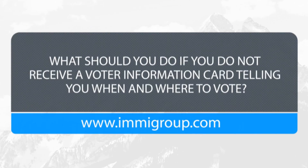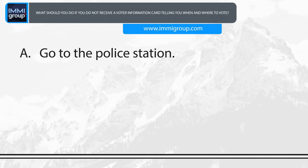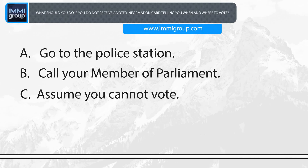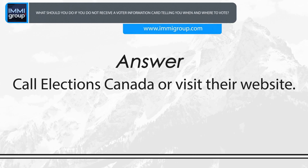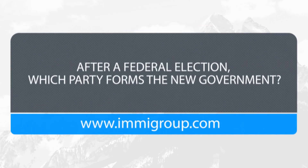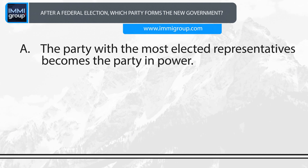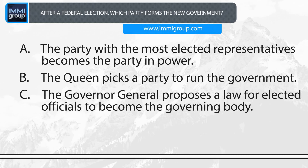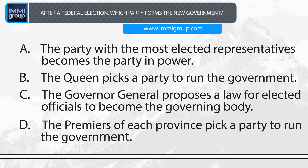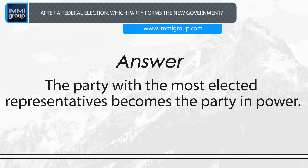What should you do if you do not receive a voter information card telling you when and where to vote? A. Go to the police station. B. Call your Member of Parliament. C. Assume you cannot vote. D. Call Elections Canada or visit their website. Answer: Call Elections Canada or visit their website. After a federal election, which party forms the new government? A. The party with the most elected representatives becomes the party in power. B. The Queen picks a party to run the government. C. The Governor General proposes a law for elected officials to become the governing body. D. The Premiers of each province pick a party to run the government. Answer: The party with the most elected representatives becomes the party in power.